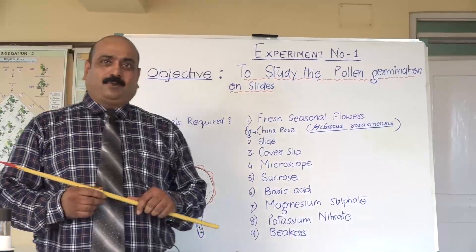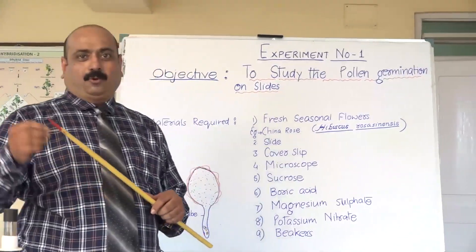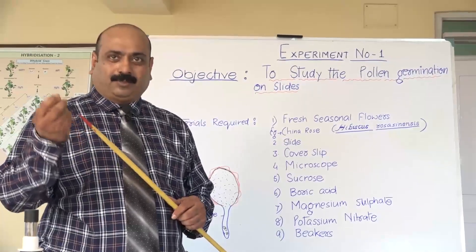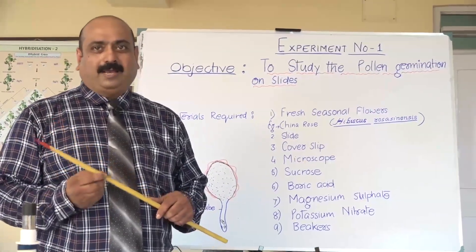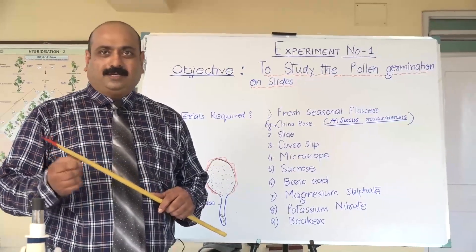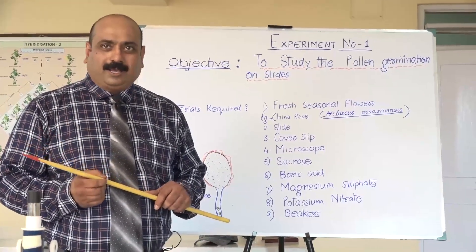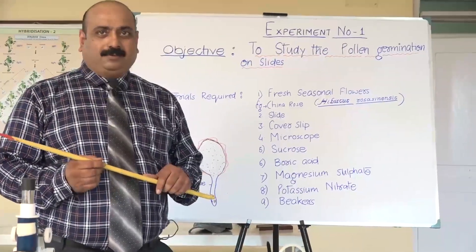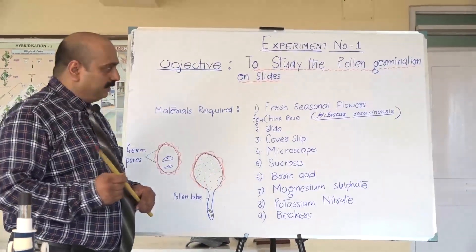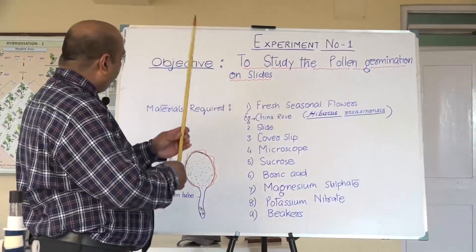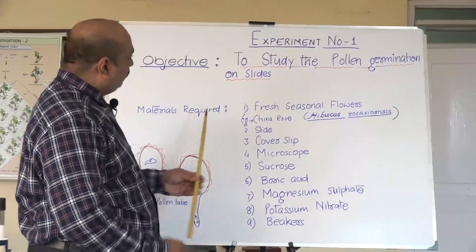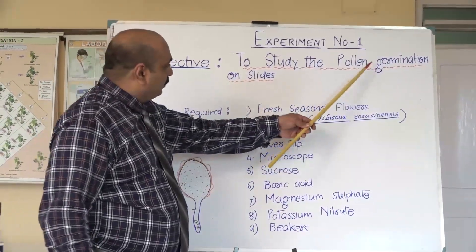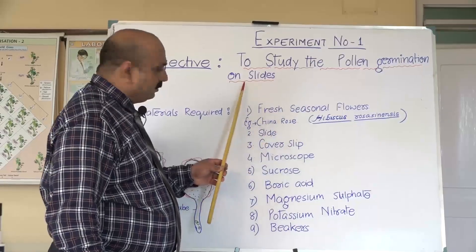As pollen grains grow into the stigma, it develops a pollen tube where we find one generative nucleus and one vegetative nucleus. The vegetative nucleus is a bit larger than the generative nucleus. The objective here is to study pollen germination on slides.